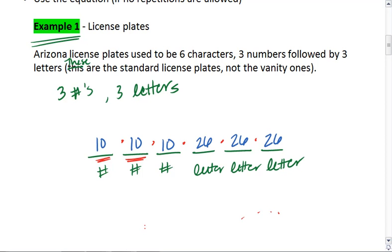This makes a total of 10 times 10 times 10 times 26 times 26 times 26, which equals 17,576,000 different license plates.